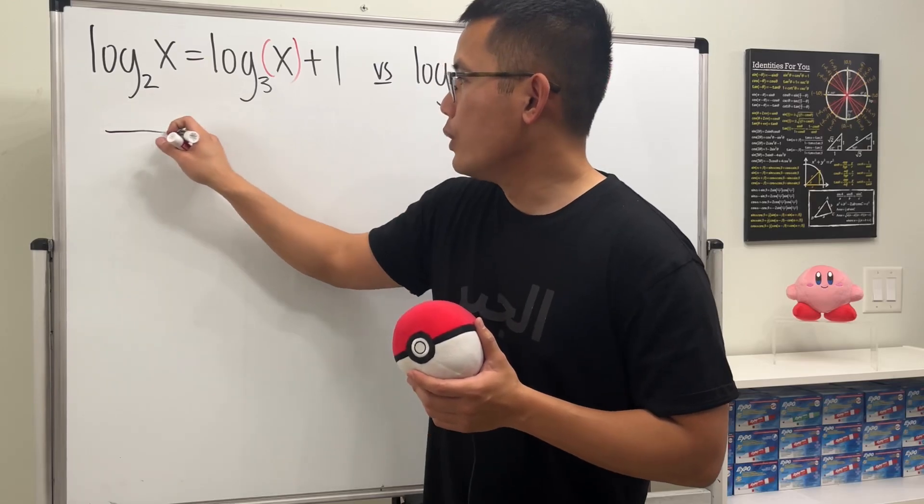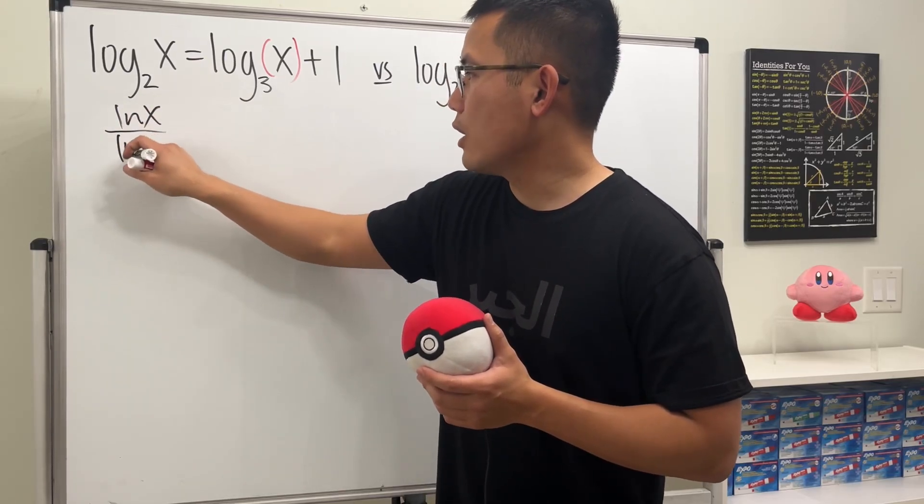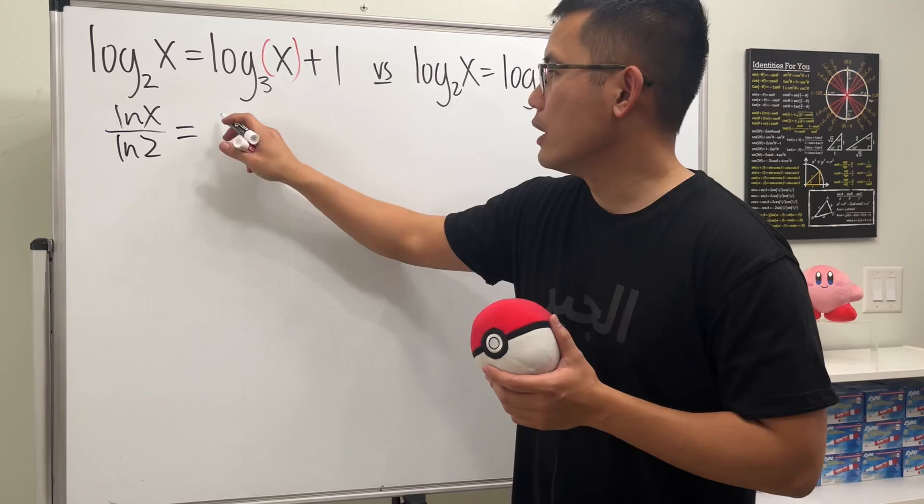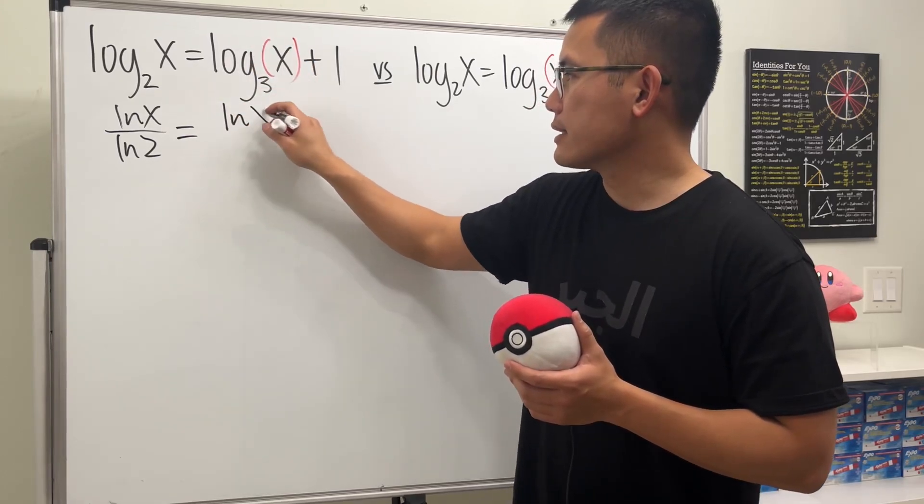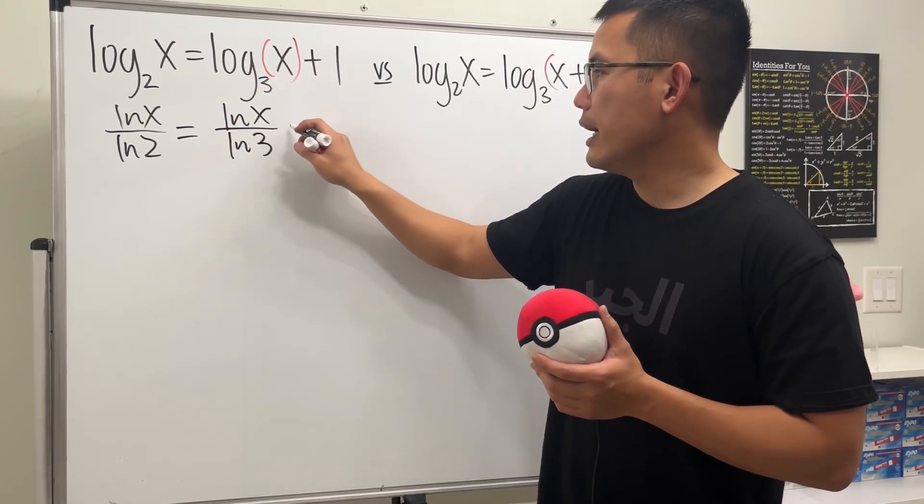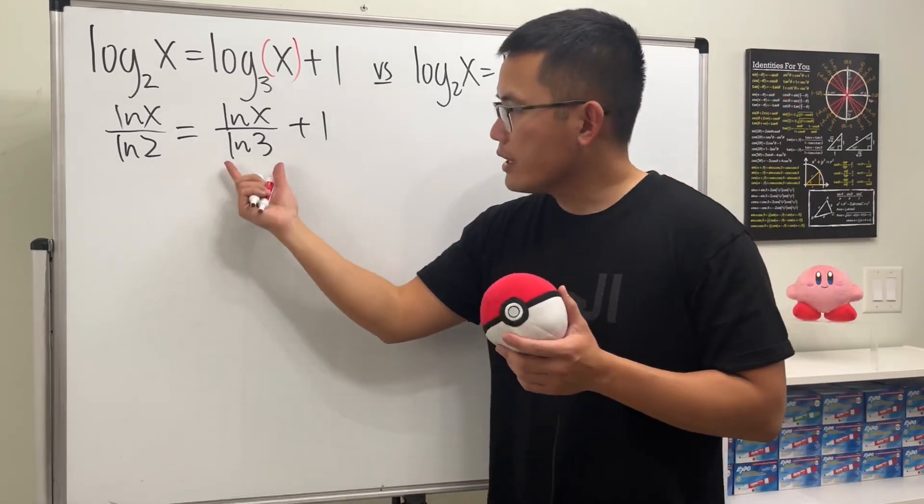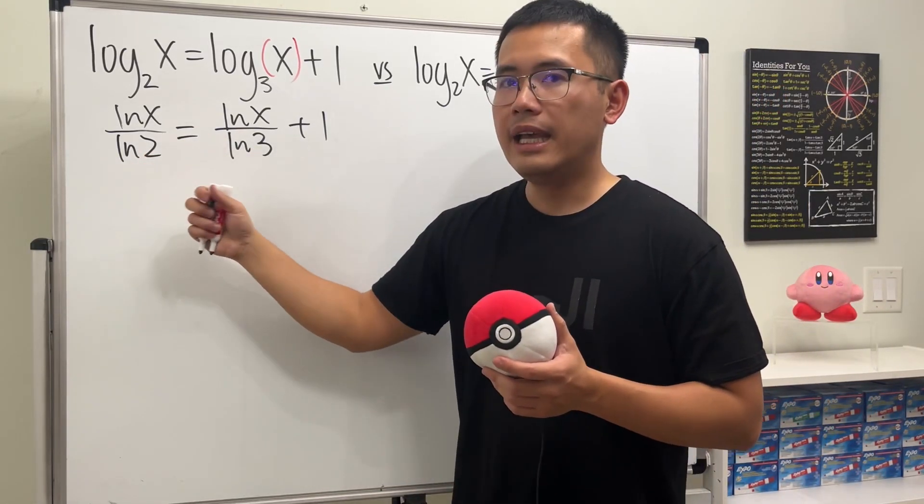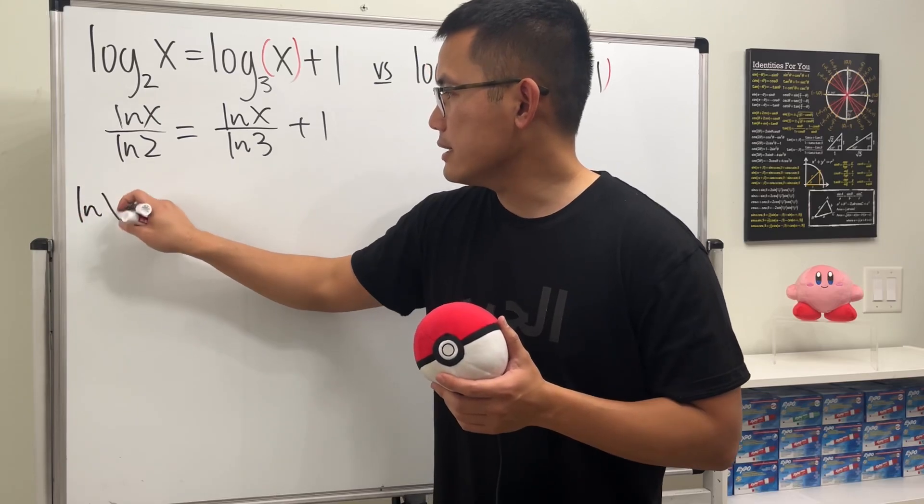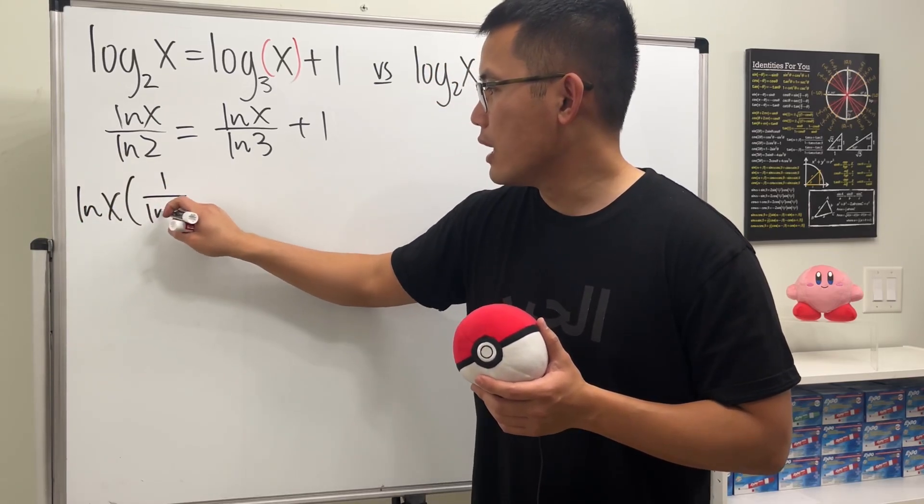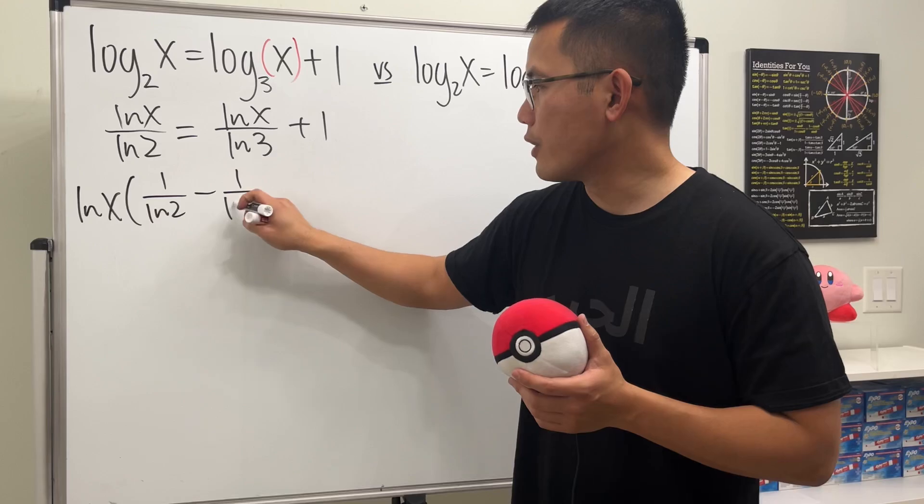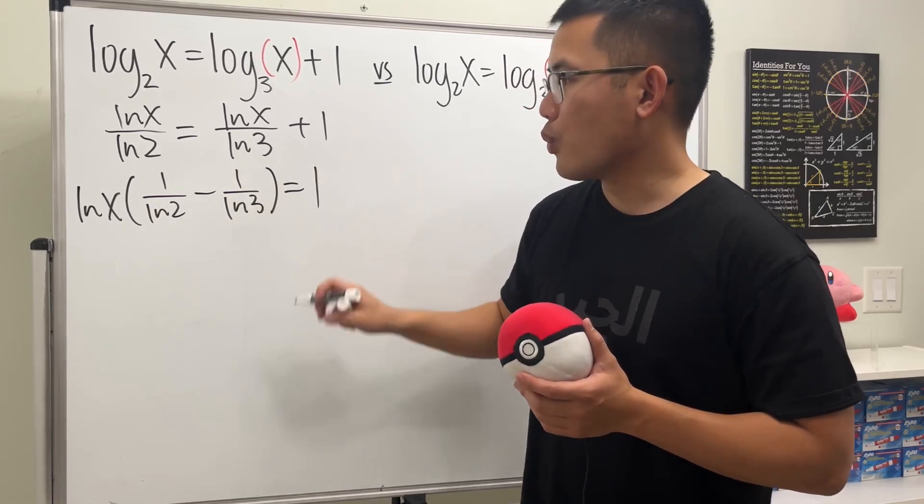So for this one, we are going to get ln of x over ln 2, and that's equal to, this right here is just ln x over ln 3, plus 1. And then right here, I can just move this to the other side and also factor out the ln x. So we get ln x times 1 over ln 2 minus 1 over ln 3, and that's equal to 1.